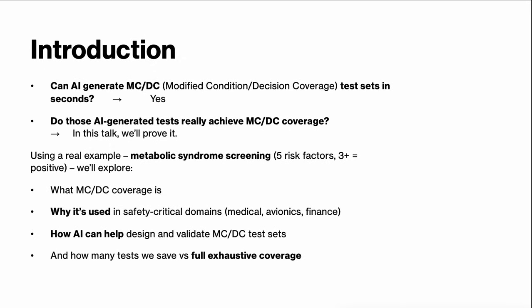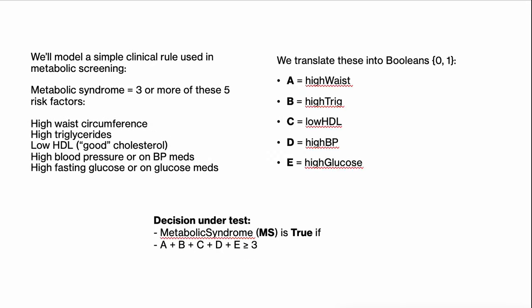Now that we've framed the problem: can we trust AI to give us MCDC test sets? I want to ground this in a real-world example. We'll use metabolic syndrome — a patient is flagged if they have three or more out of five risk factors. On this slide you can see the five clinical risk factors. First: waist size — for men, over 102 centimeters or 40 inches; for women, over 88 centimeters or 35 inches.